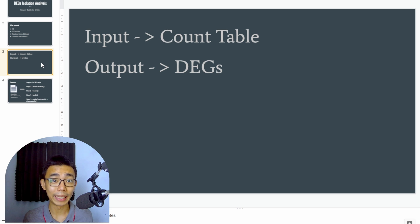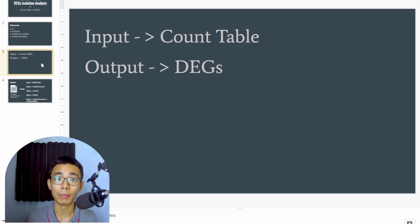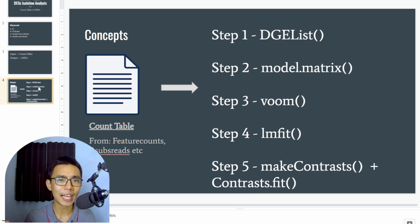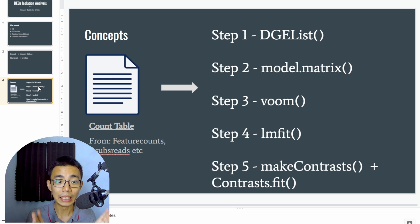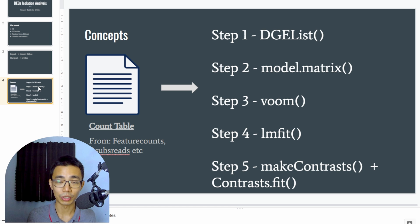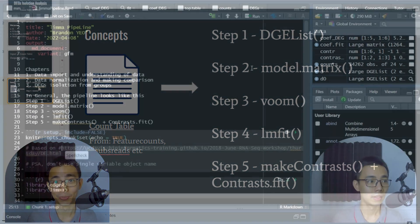This analysis takes a count table as input and generates a list of DEGs. In the limma-voom pipeline there are five main steps: creation of a DGE list object, creation of a model matrix for your experimental design, fitting into a voom transformation, fitting a linear model suitable for RNA sequencing analysis, and then running makeContrasts and contrast fit to isolate the DEGs. Let's move on to RStudio.